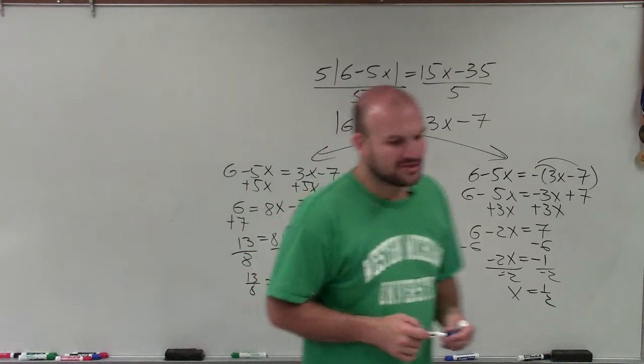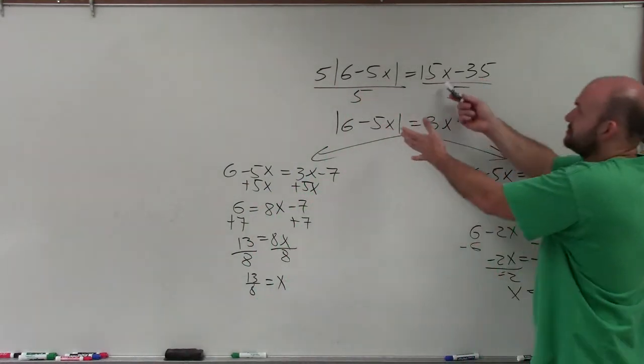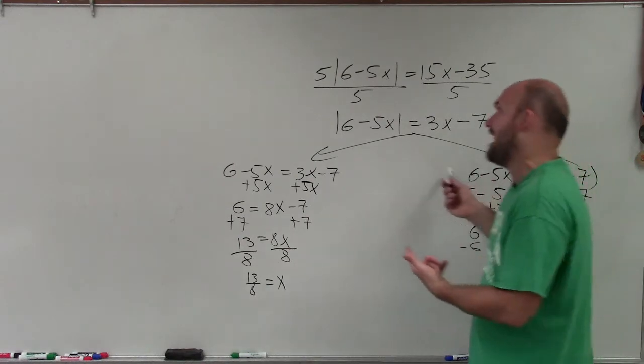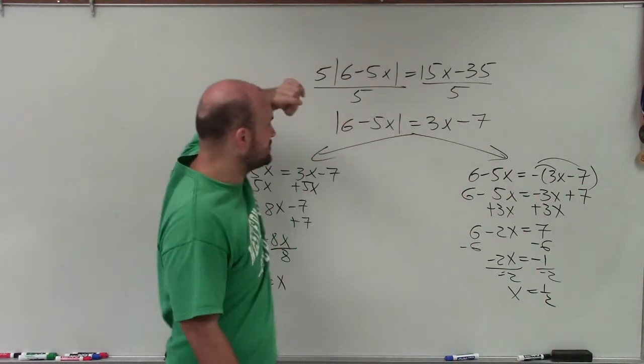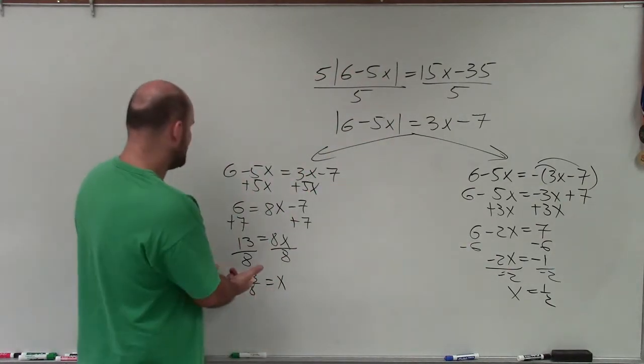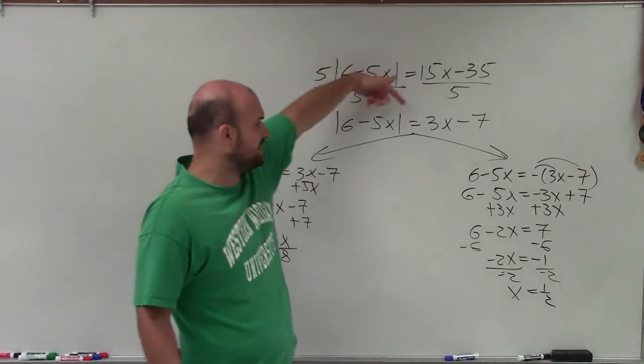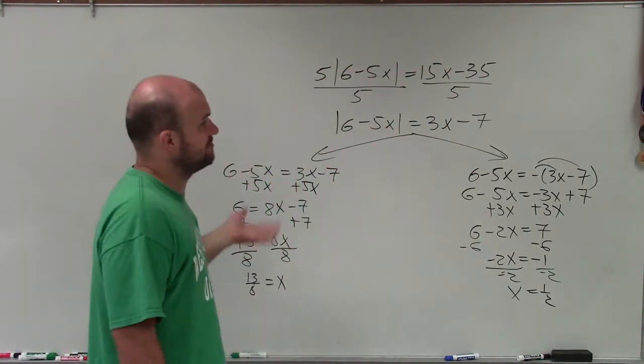So we have two solutions that do not look very fun to test, right? I don't really want to, I mean, 1 half's not that bad. But still, you have to put in 1 half for each of these x's and then simplify it. Does the left side equal the right side? The same thing for 13 over 8. That 13 over 8 definitely is not going to be very much fun.